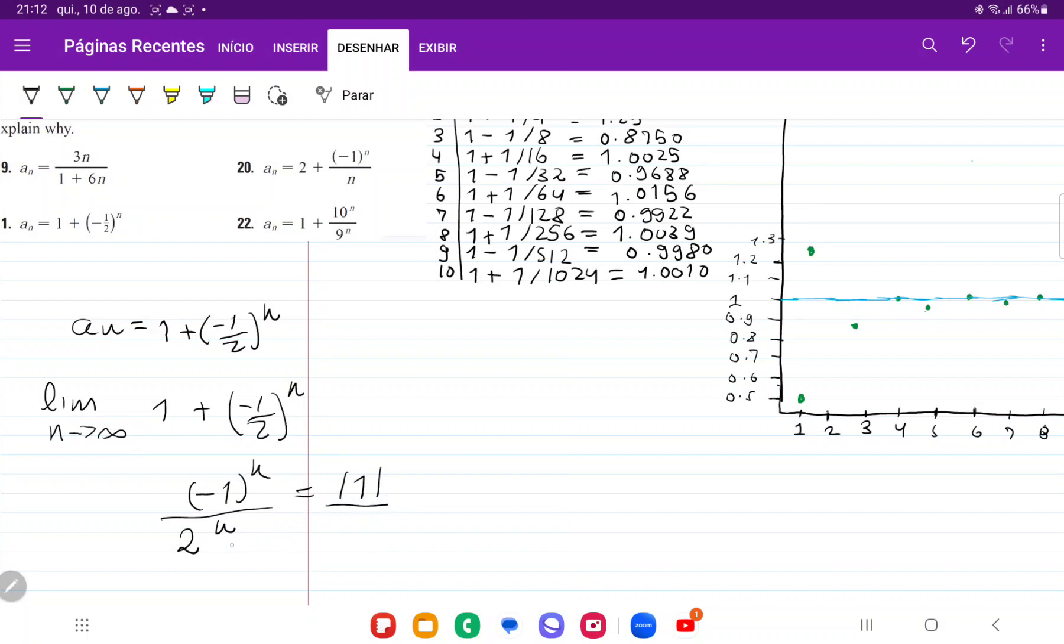And then 2 to the power of n, as n goes to infinity, well, that is the limit of 2 to the infinity, which is 1 divided by infinity, which the limit is 0.